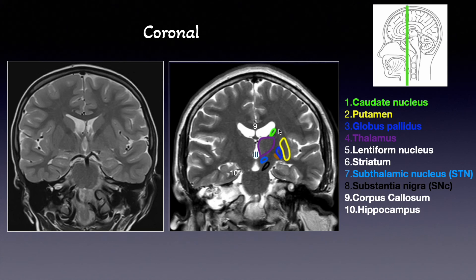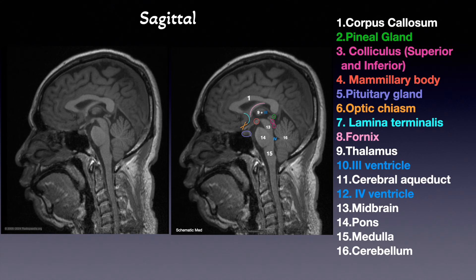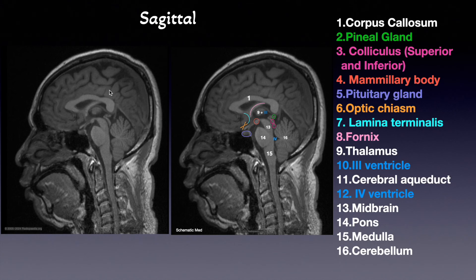Last but not least, the sagittal plane. We remember that the sagittal plane divides the body part into left and right parts. Let's orient ourselves: this is the anterior part — this is the nose, this is the tongue — and this is the posterior part. Again, very good depiction of the sulci and gyri; we can see how it is wavy all over the brain. We will start from the corpus callosum, which we already talked about — this structure connects the two brain hemispheres, the left and the right one.